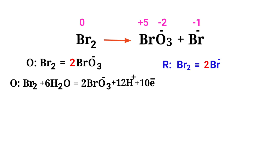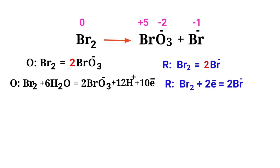Now balance the charges in the reduction half reaction. Both sides are not equal, so add 2 electrons to the left side to make it equal to minus 2. Now the charges are balanced in the reduction half reaction.